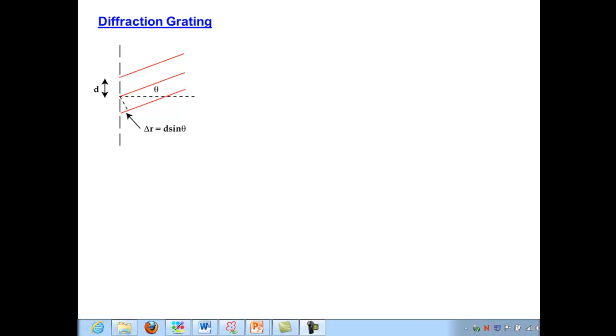And now let's consider another one, and this is a device called a diffraction grating. A diffraction grating is really nothing more than many, many slits put adjacent to one another.